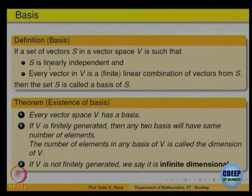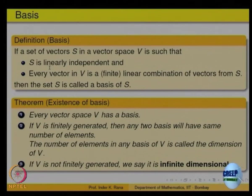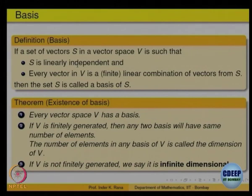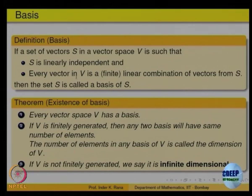S may not be finite — keep that in mind; things are becoming different from the normal case. Earlier when we had subspaces of R^n, everything was finite. Here, a subset S which may or may not be finite is called a basis if it is linearly independent, and every vector is a linear combination of elements of S.